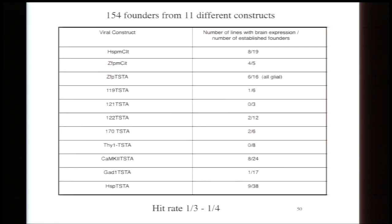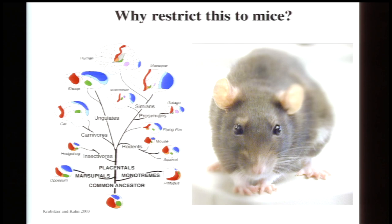We haven't done hundreds of these, but we've done 150. The hit rate is quite high — something like a third, depending on the particular vector, produce interesting patterns in the brain. One of the questions that keeps coming up is how we're going to move from the mouse to other species. The core problem to be solved is really the enhancer problem: finding the genetic regulatory elements and putting them into a virus in order to label or target specific cell types in any species.